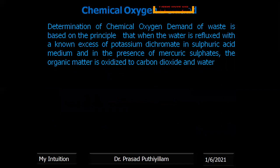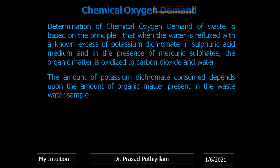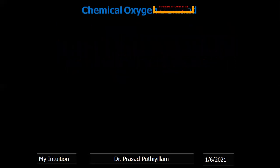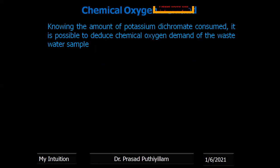The determination of Chemical Oxygen Demand is based on the principle that when the water sample is refluxed with an excess amount of potassium dichromate in acid media in the presence of mercuric sulfate, the organic matter is oxidized to carbon dioxide and water. The unreacted potassium dichromate is then estimated using ferrous ammonium sulfate (FAS). The reaction mixture containing unreacted potassium dichromate is determined by titrating with FAS solution using ferroin as the indicator. Knowing the amount of potassium dichromate consumed, it is possible to calculate the amount of oxygen in milligrams per litre.